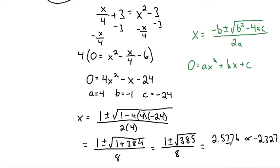Rounding that to the nearest hundredth would be 2.58. The 7 goes up to an 8. Or rounding this one, the 7 makes that 2 go up, negative 2.33.